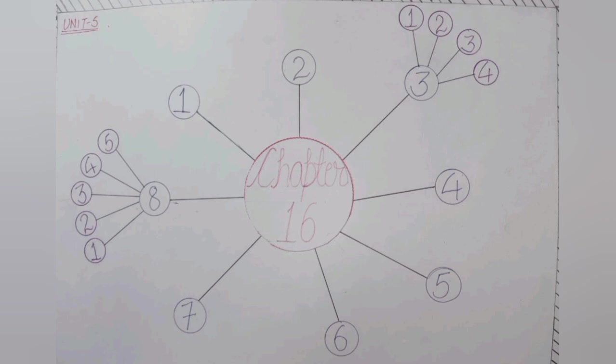In the animal kingdom, there is a variety of excretory structures. Platyhelminthes have flame cells and protonephridia in flatworms.